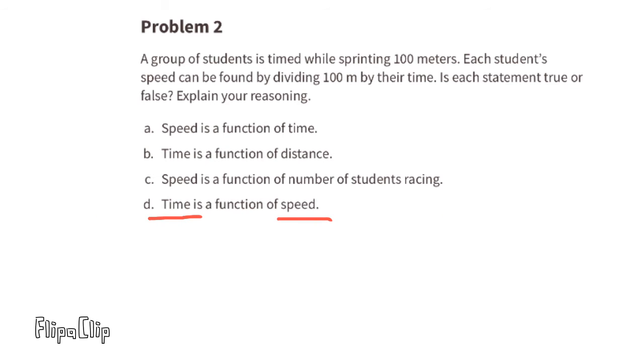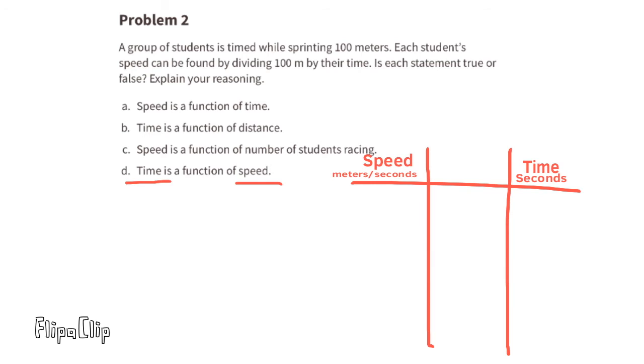D. Time is a function of speed. Imagine that the input is speed, meters per second. Let's say this person ran 50 meters in 11 seconds. The function could be 100 meters divided by 22 seconds, which is equivalent to 50 meters in 11 seconds. Imagine the input is 4 over 1. The function could be 100 meters divided by 25 seconds. 100 over 25 is equivalent to 4 over 1, or 100 meters in 25 seconds is equivalent to 4 meters in 1 second. This is true. There is one time for each speed found.